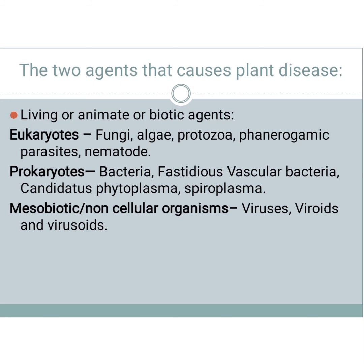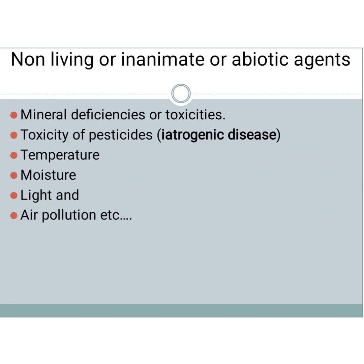The two agents that cause plant disease are categorized as living and non-living. Living or animate or biotic agents include eukaryotes, prokaryotes, and mesobiotic or non-cellular organisms. Eukaryotes include fungi, algae etc.; prokaryotes include bacteria, spiroplasm, phytoplasm etc. Mesobiotic non-cellular organisms include viruses, viroids etc. Phanerogamic parasites include Cuscuta — we will see these in detail in another video.